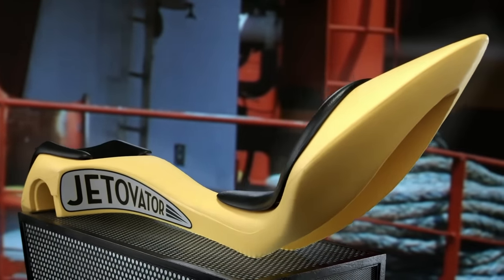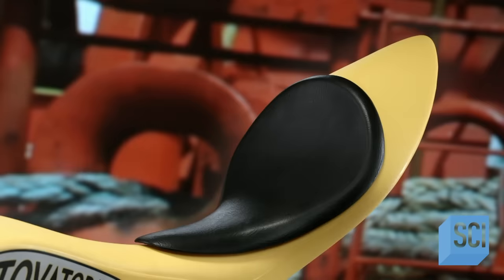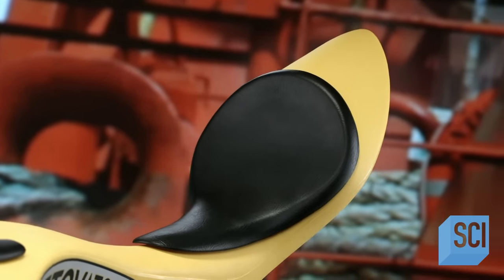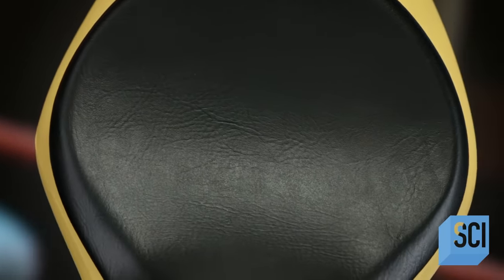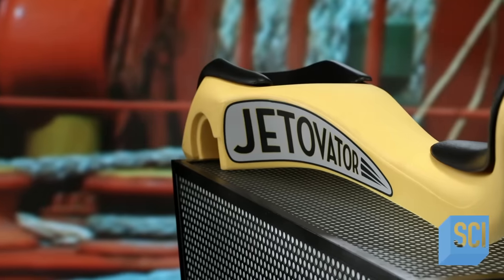Looking to get high on a new water sport? Well, you literally can riding a flying water bike. It attaches with a long hose to the back of a jet ski, elevating you up to almost 40 feet above the water where you can perform aerial flips and spins.